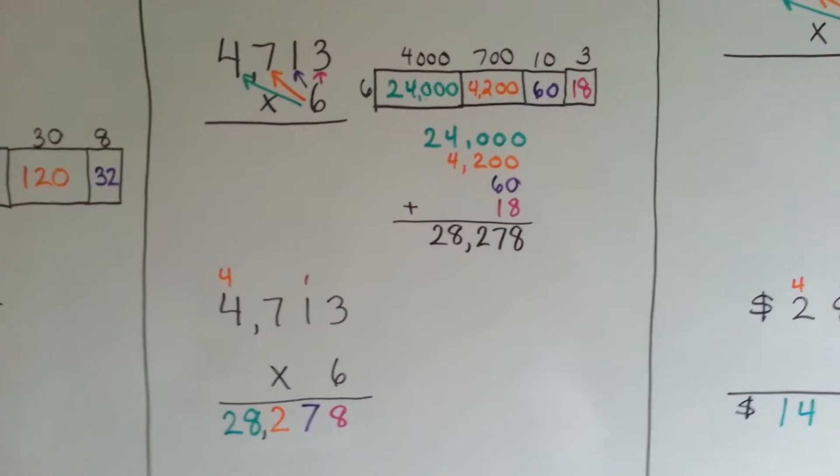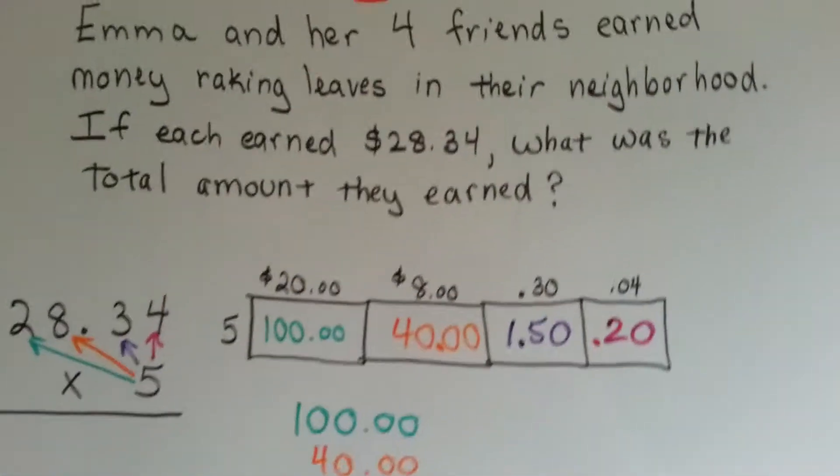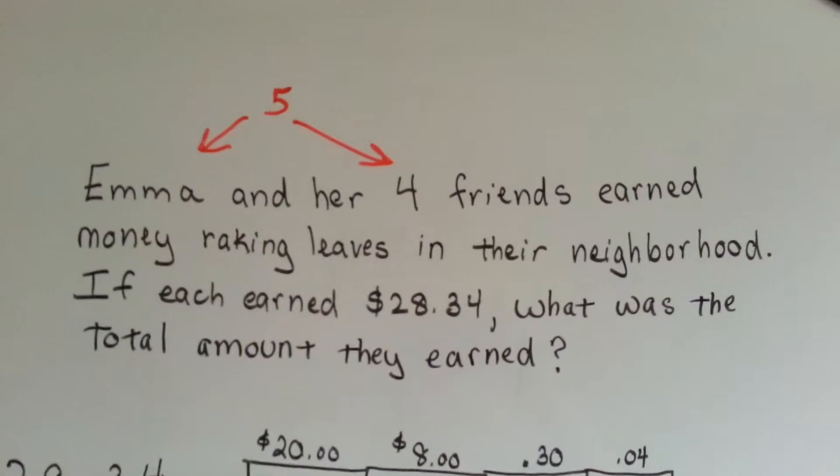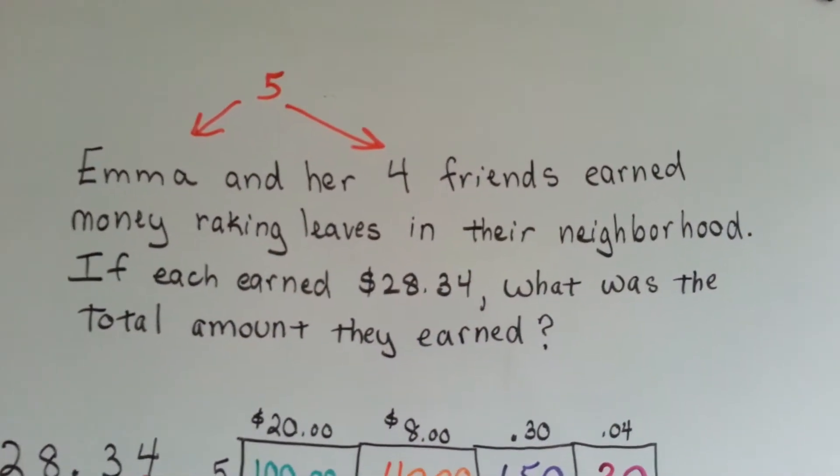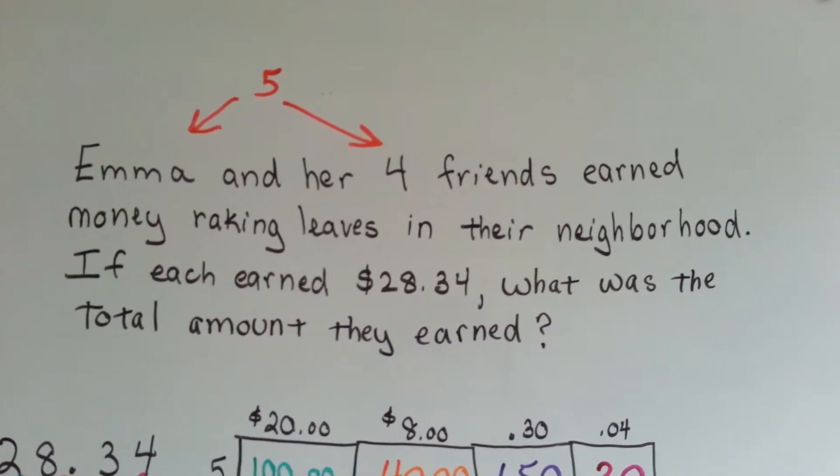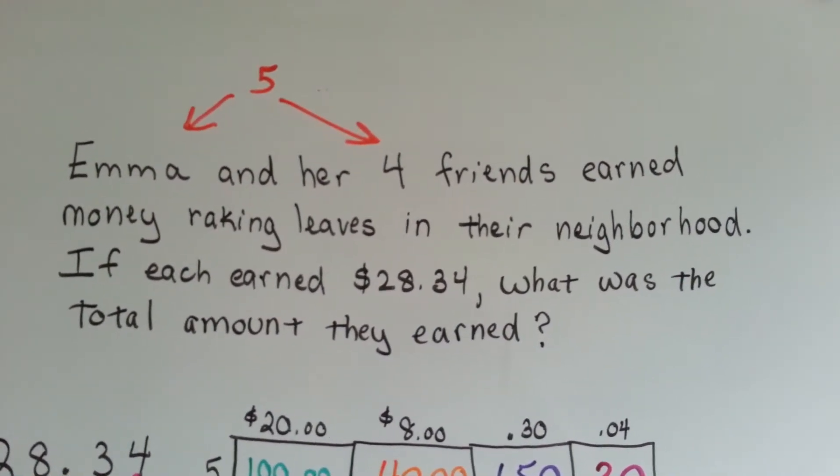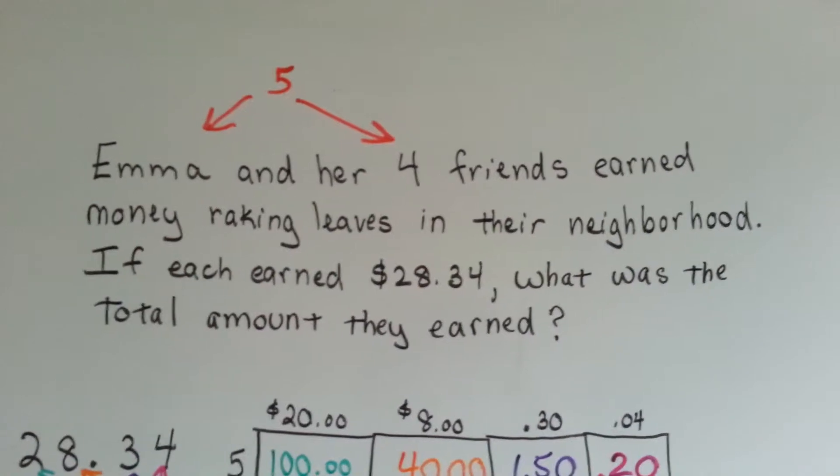Okay? We got one more. We're going to do it with money. Emma and her 4 friends earned money raking leaves in their neighborhood. If each earned $28.34, what was the total amount they earned before they split it all up?